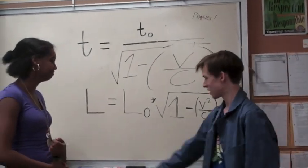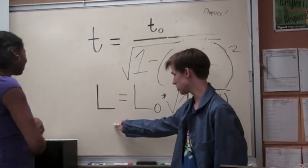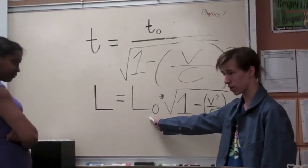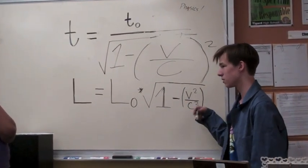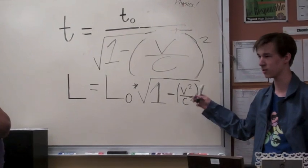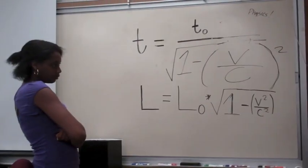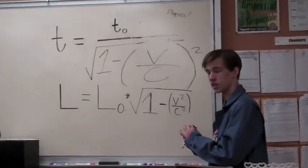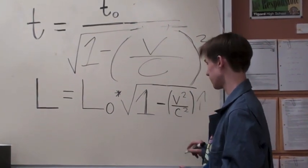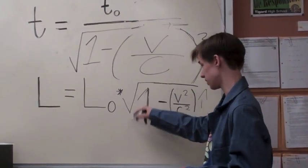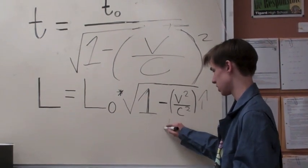Now, as we see we have the length that the object has for its initial length, times square root 1 minus velocity squared over the speed of light squared. As the velocity gets close to the speed of light, this number here gets bigger. And as that gets bigger, the whole system gets smaller.